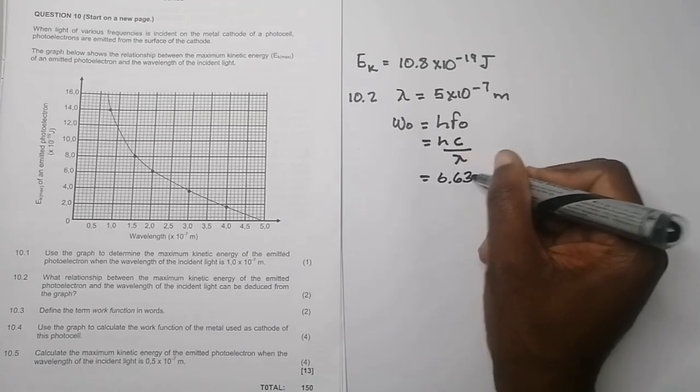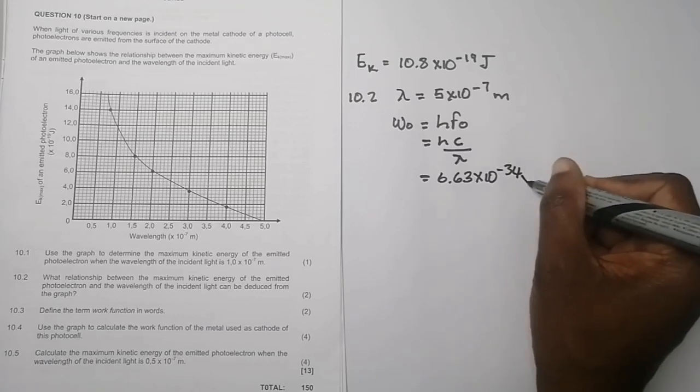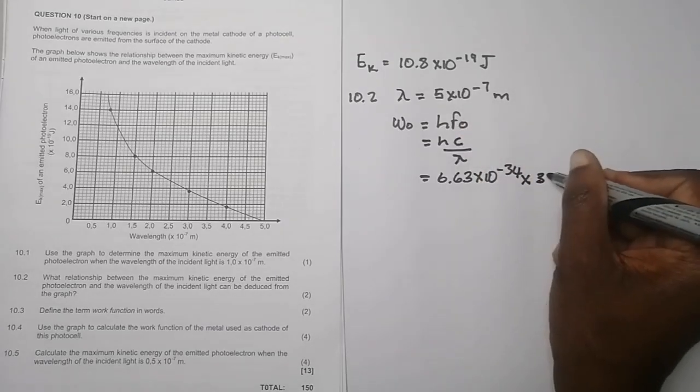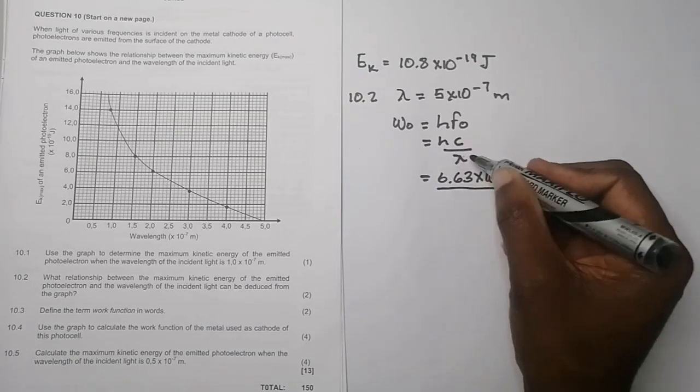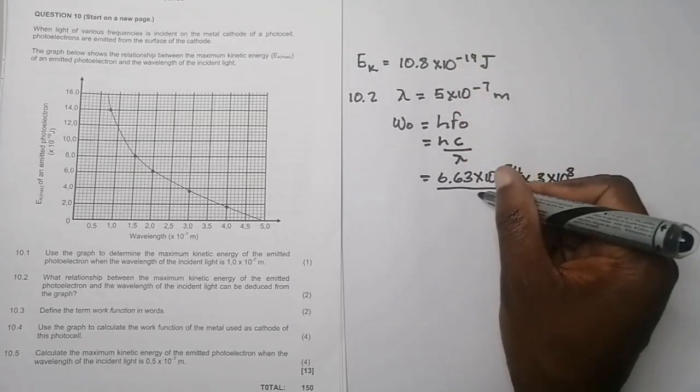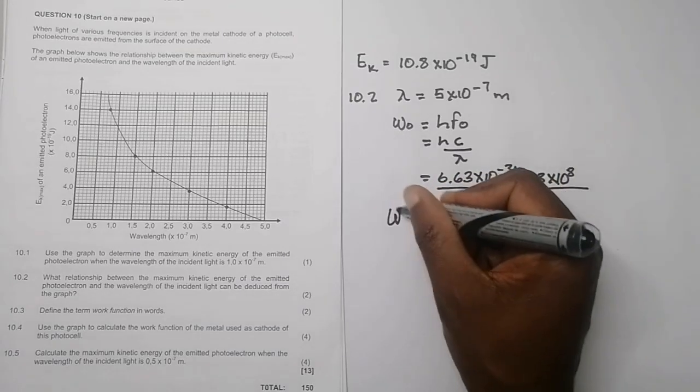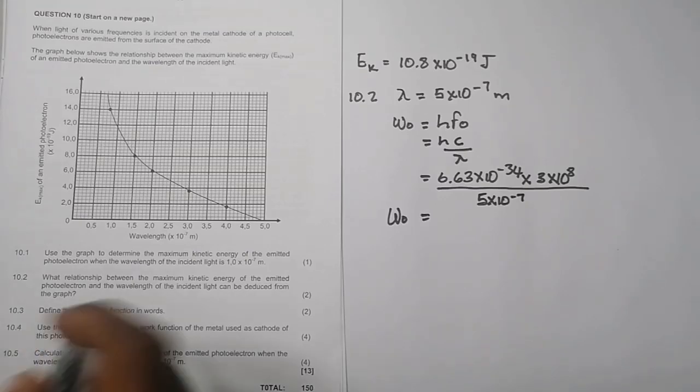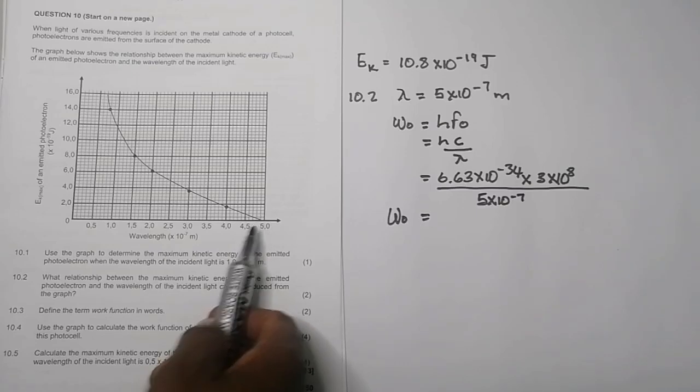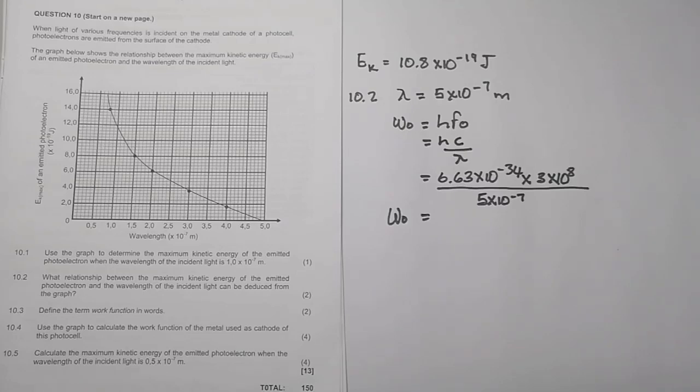So therefore, this is 6.63, that's Planck's constant, times 10 to the minus 34, multiplied by the speed of light, which is 3 times 10 to the power 8, and we divide that by that wavelength there that we said is 5 times 10 to the minus 7. And that should give us the work function of this particular metal.